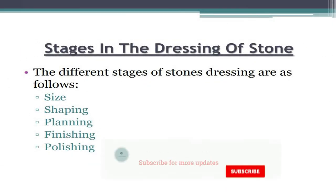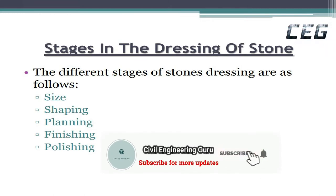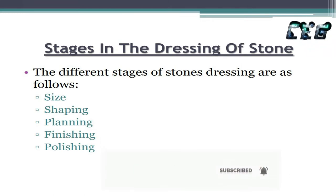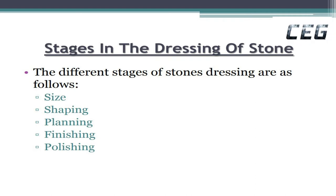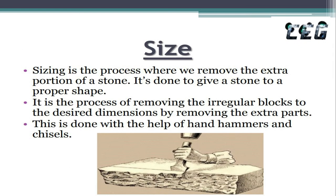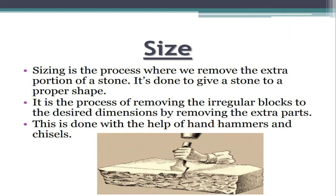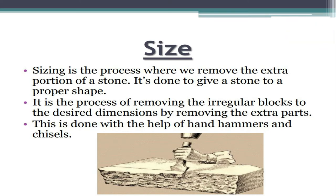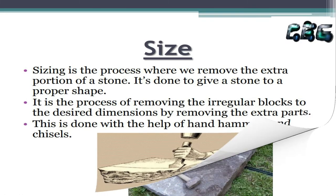Stages in the dressing of stone: The different stages of stone dressing are size, shaping, planning, finishing, and polishing. Sizing is the process where we remove the extra portion of a stone. It is done to give a stone a proper shape. It is the process of removing irregular blocks to the desired dimensions by removing the extra parts. This is done with the help of hand hammers and chisels.